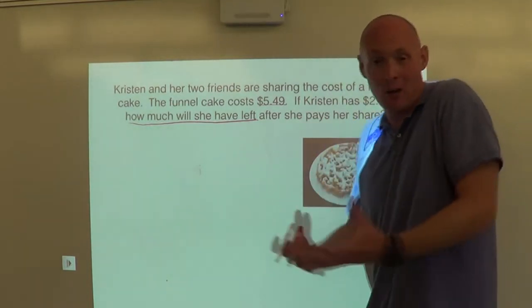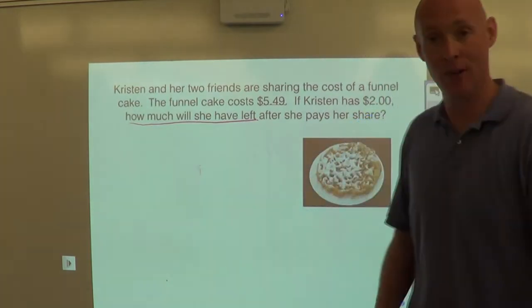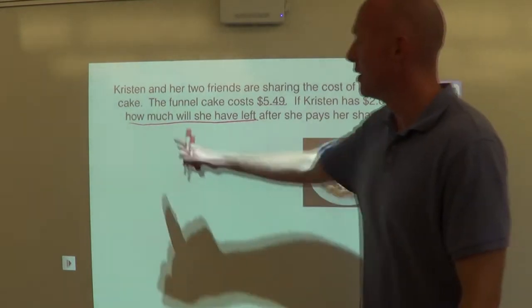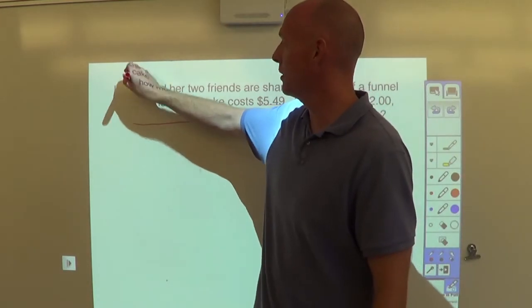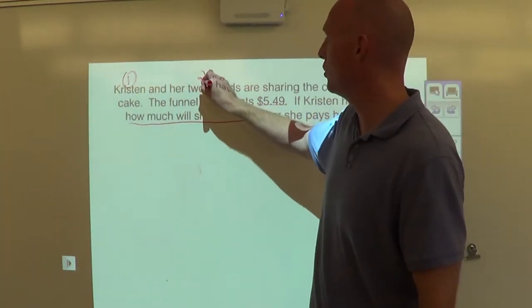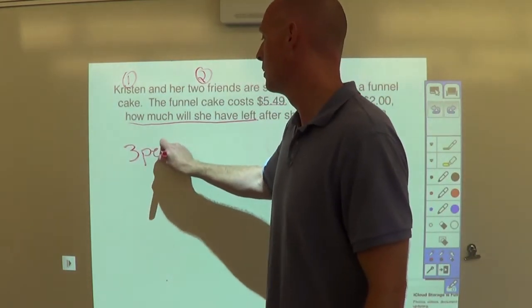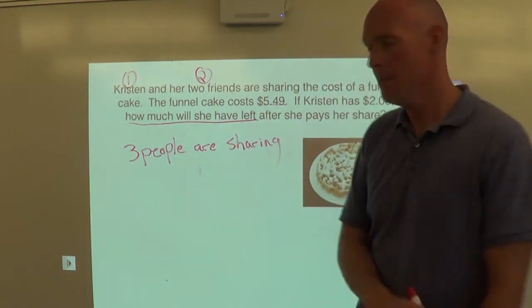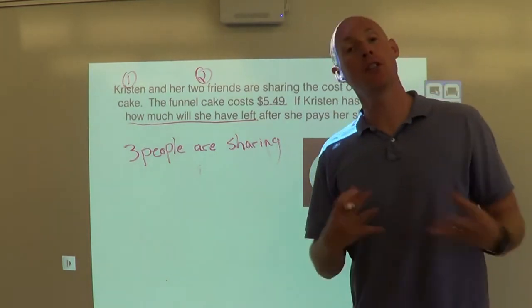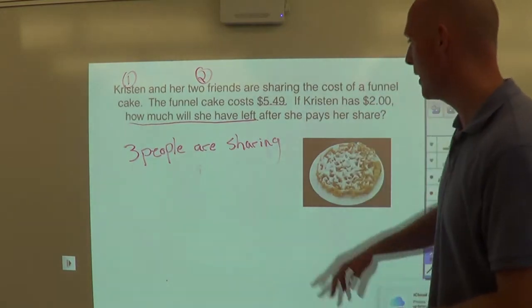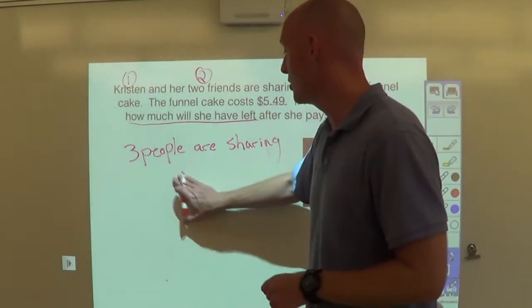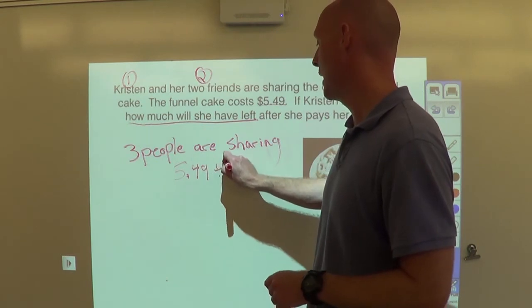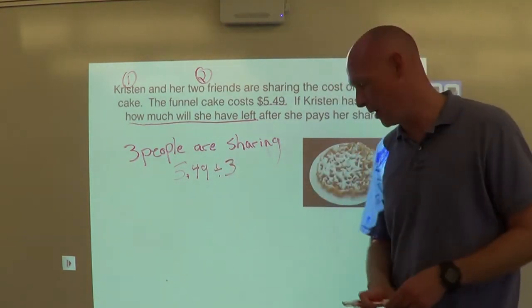So first off, I got to know, we got a group of people eating a funnel cake and they're all sharing the cost of it. So first thing I got to know is, how many people are sharing the funnel cake? Well, Kristen and her two friends. So that's one person and her two friends. That's two people. So we now know three people are sharing. Okay. Kristen and her two friends. Three people are sharing the cost. So what's the cost of the funnel cake? The cost is $5.49. So we're going to take 5.49, we're going to divide that by 3 because 3 people are sharing the price. Excellent.